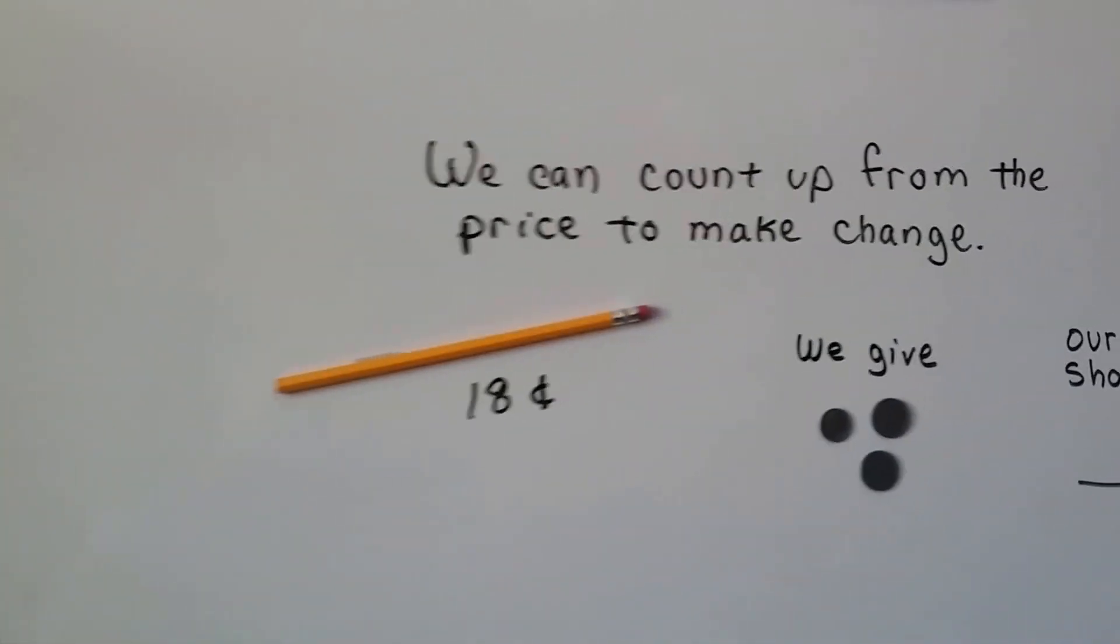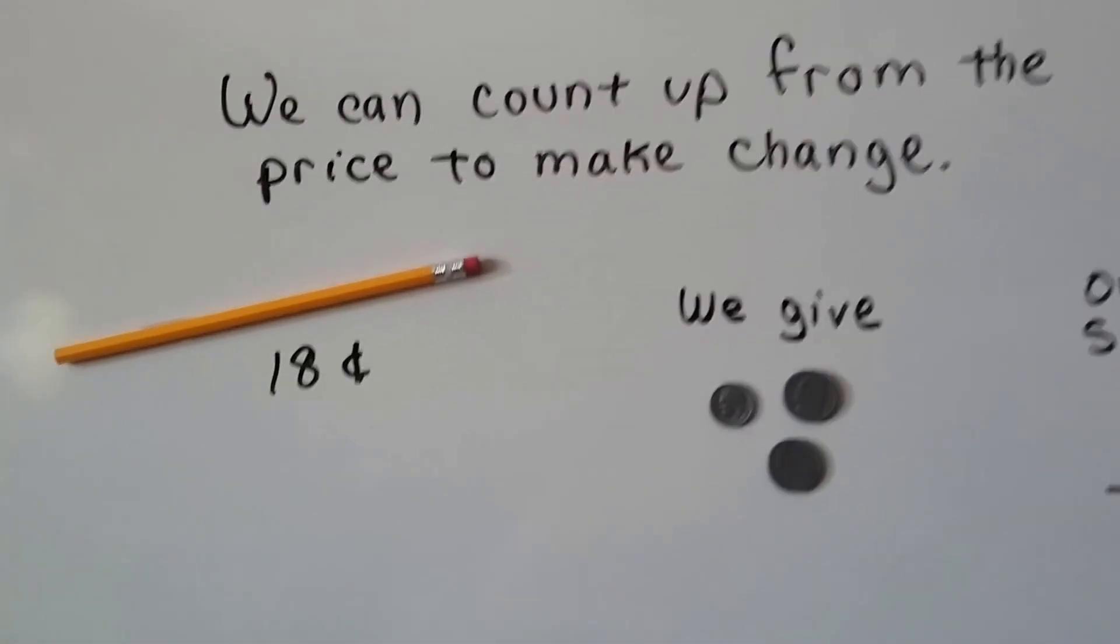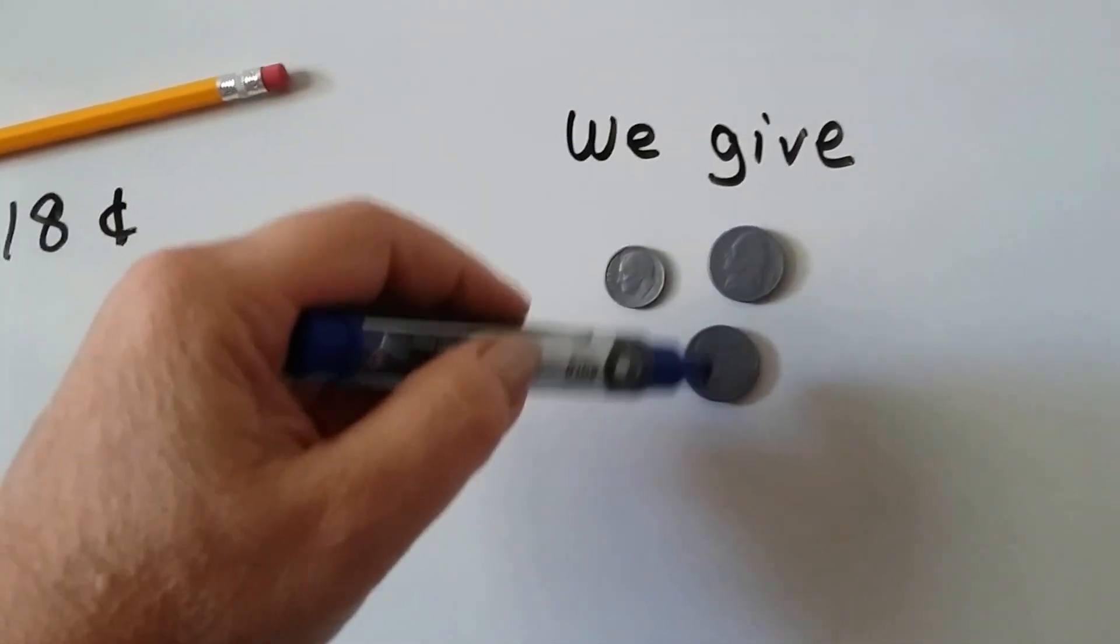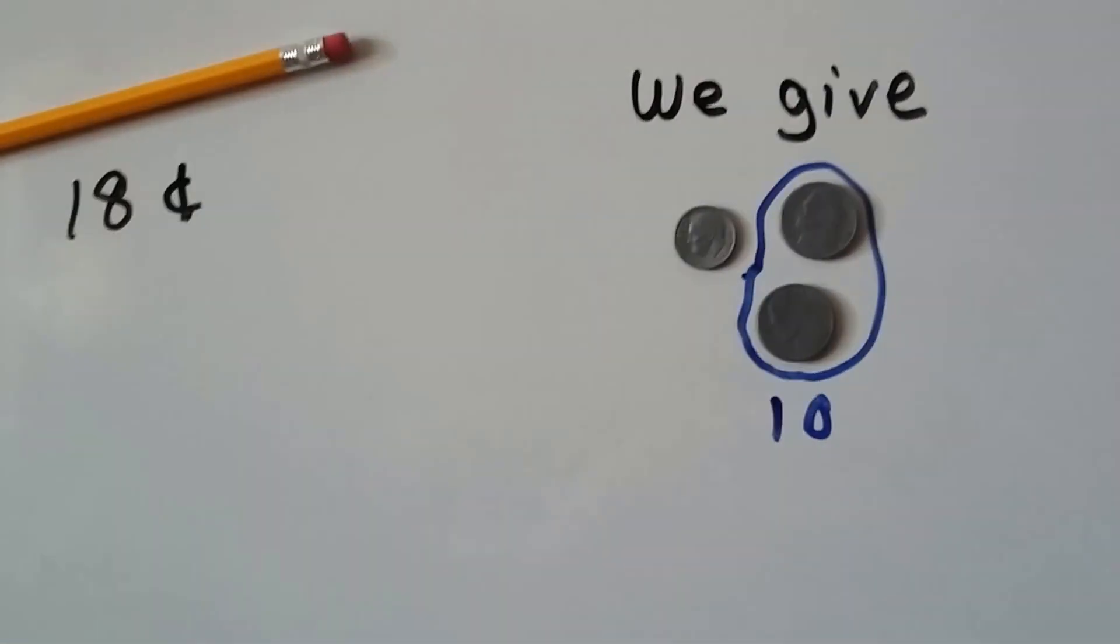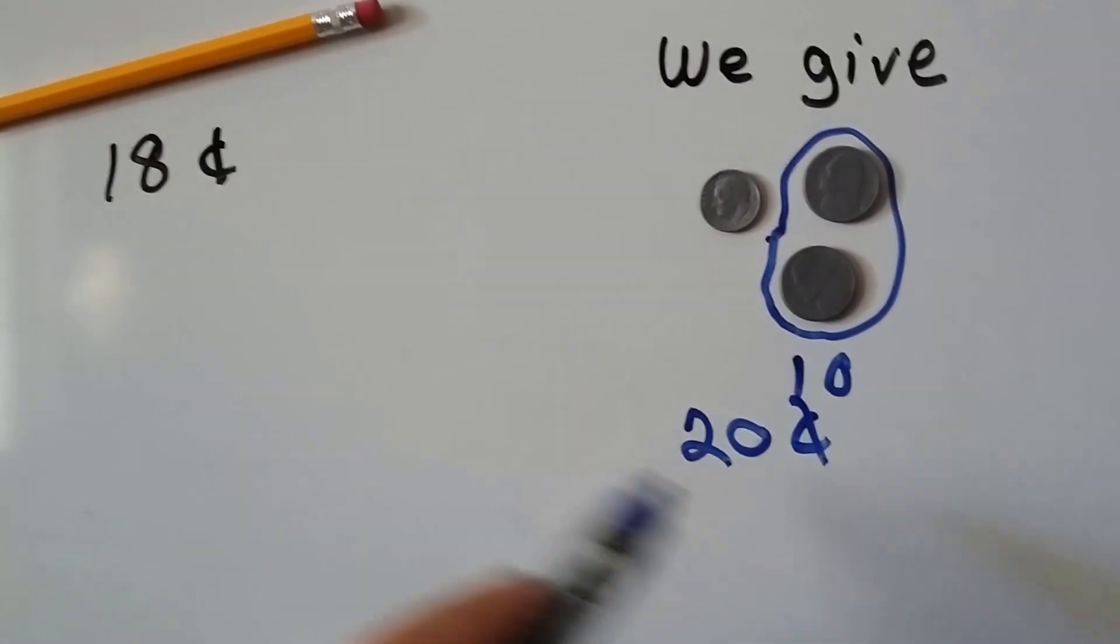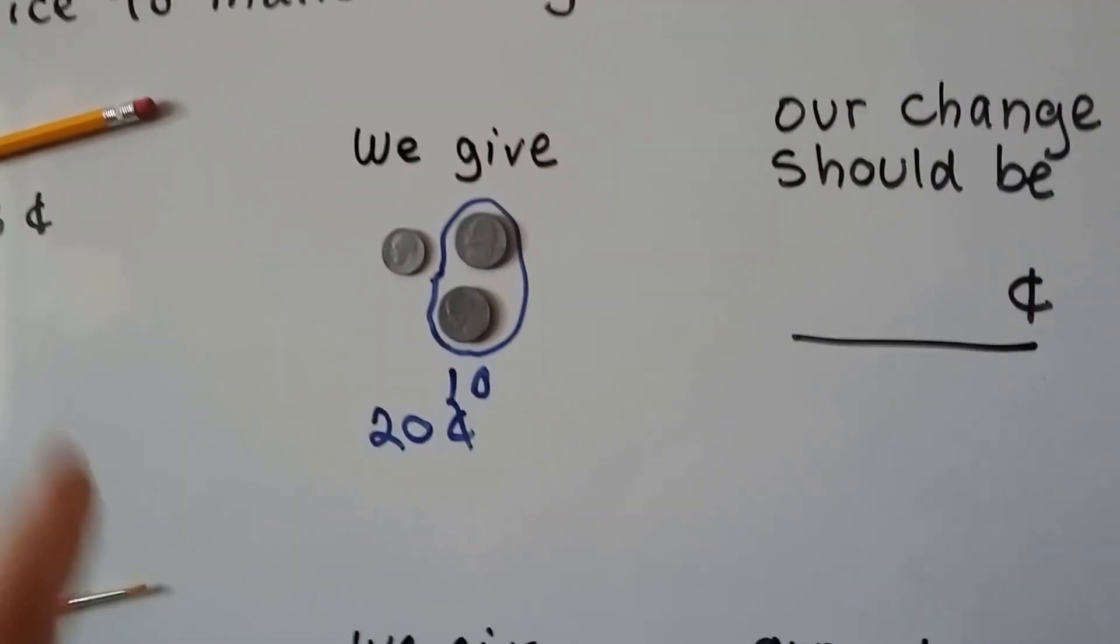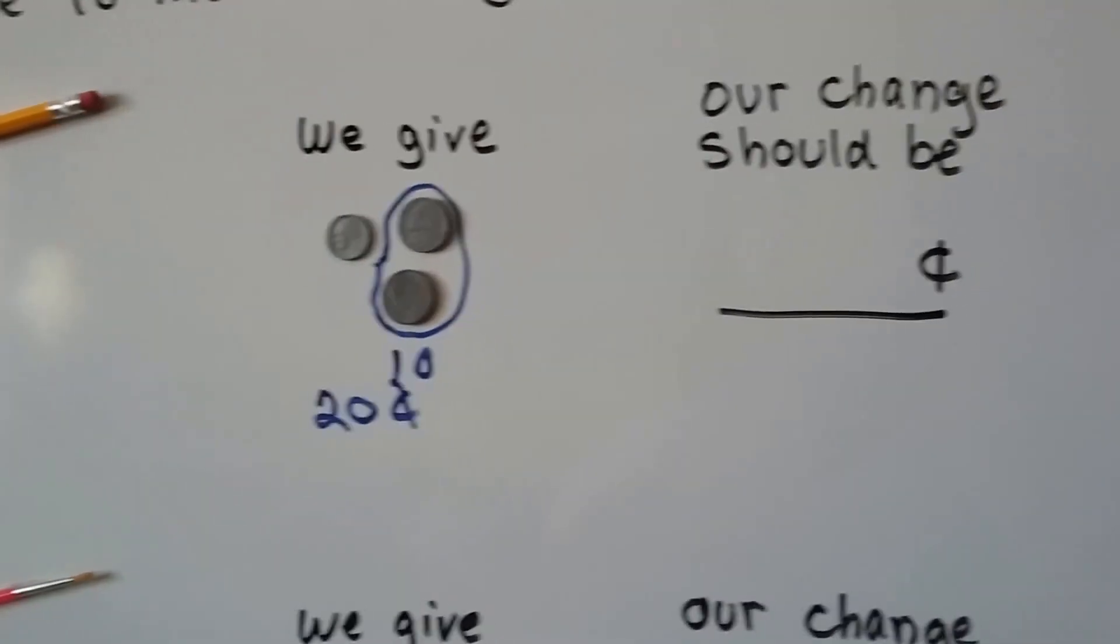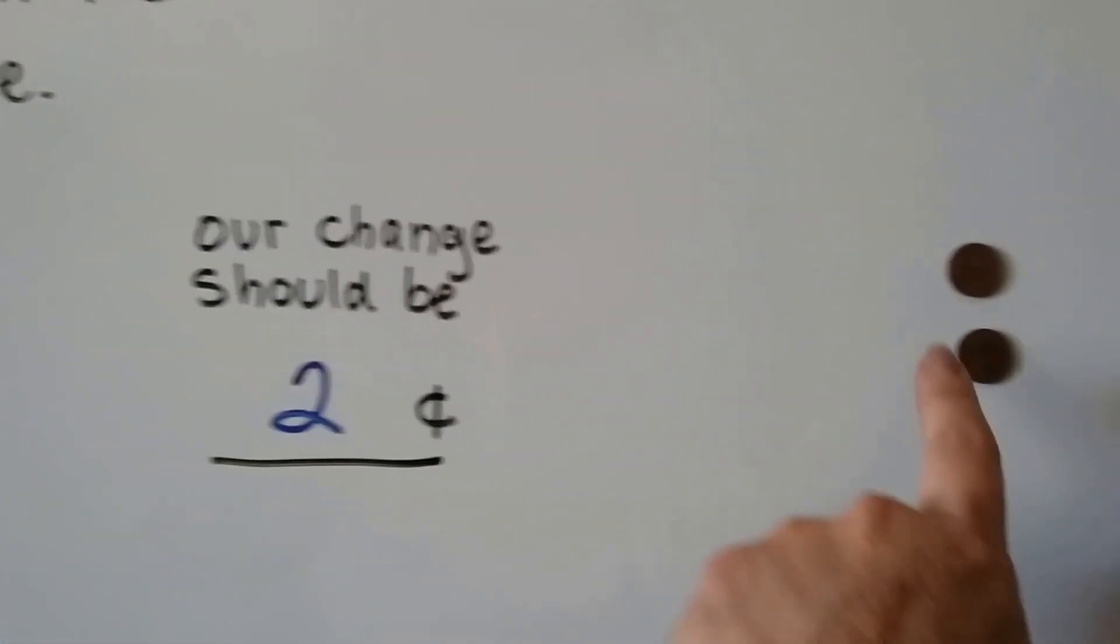And we can count up from the price to make change. If a pencil costs 18 cents and we give the cashier a dime and two nickels, remember these are each five, and five and five makes 10, doesn't it? So we have a 10 and a 10, that's 20. So we gave 20 cents and the pencil costs 18 cents. So what should our change be? We start with the 18 and we count up to 20: 18, 19, 20. Two cents. We gave a dime and two nickels and our change is two pennies.